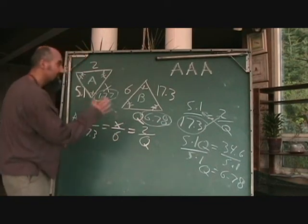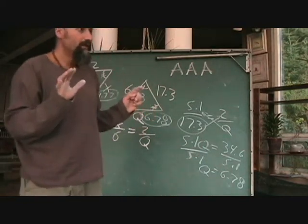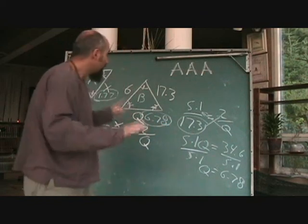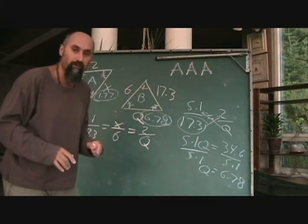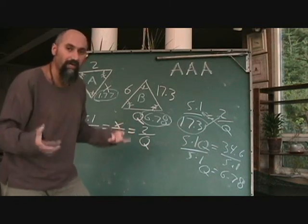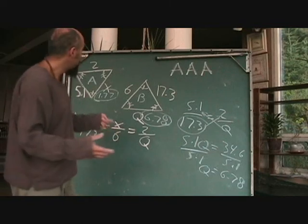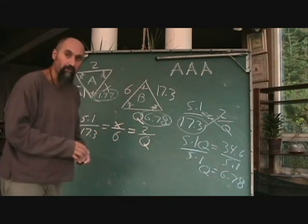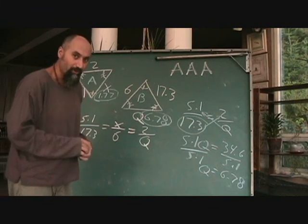Similar triangles are extremely useful when finding the dimensions of a triangle when you don't know the exact angles and it's not a right-angle triangle — because then you can't use the Pythagorean theorem. Instead, you do a comparison from one triangle to another using ratios. Good luck with the problems.